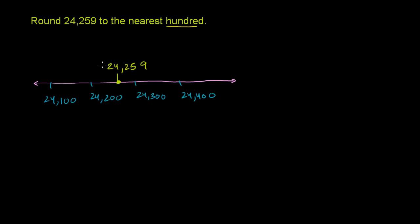So when someone asks you to round to the nearest hundred, they're literally saying round to one of these increments of 100, or round to whichever increment of 100 that it is closest to. And if you just eyeball it, you'll actually see that it is closer to 24,300 than it is to 24,200.